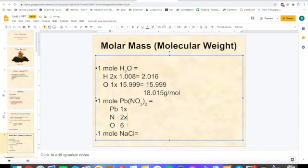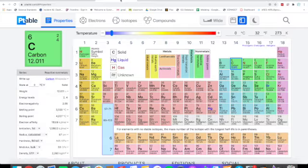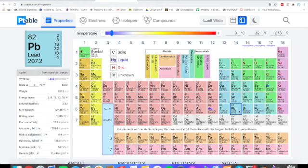For oxygen we have three, but there's two outside of the parentheses, so you'll do two times three which is six. Now we need to find the mass for each of the elements.